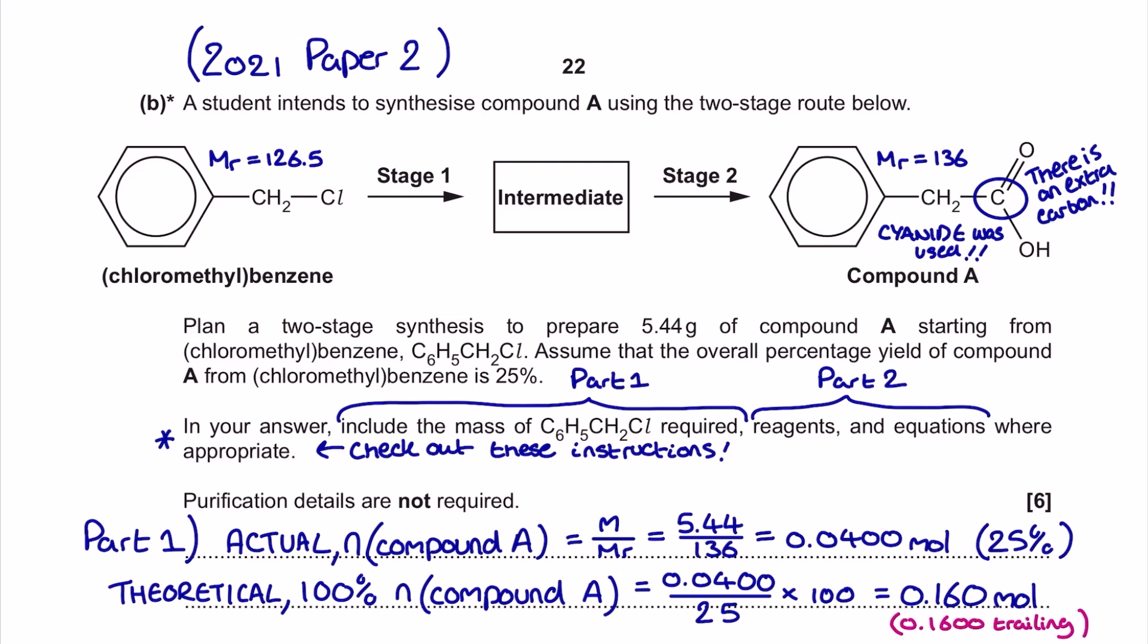Now we need to include in our answer the mass of the chloromethyl benzene that would be required to make the 5.44 grams of compound A, and we also need to include reagents and equations where appropriate to describe that two-step synthesis.